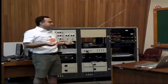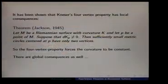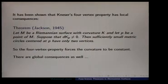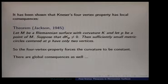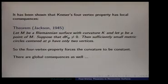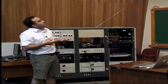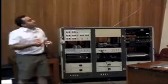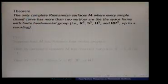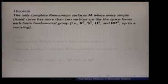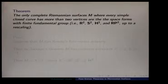We need to show there are global consequences as well. The only complete Riemannian surfaces where every simple closed curve has more than two vertices are the space forms with trivial fundamental group, and you also pick up RP². If you demand at least four vertices, you have just R², S², and H². This is a curious characterization: simply connected space forms are the only two-dimensional Riemannian manifolds where Nieser's four-vertex theorem holds.